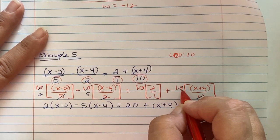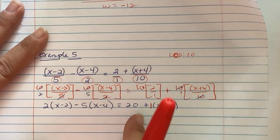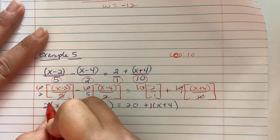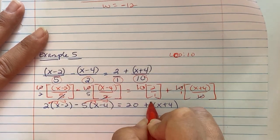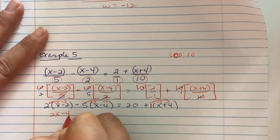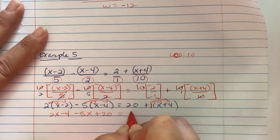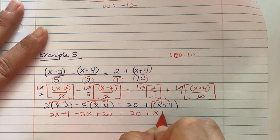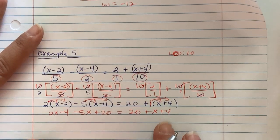Now you are going to distribute. So if you want to think about it, this is actually a 1, it reduces to a 1, and we can put a 1 there in case that happened to be a minus sign and distribute in on the left and on the right. So you get 2x minus 4 minus 5x plus 20 equals 20 plus x plus 4.